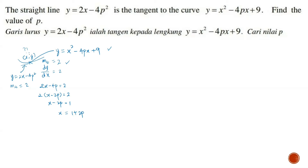Once we reach here, we can substitute the x value into our point. Initially we did not know what that x-coordinate was — it is 1 plus 2p. That is the reason I like to illustrate the curve with the tangent, because these three are considered the golden triangle. Once I have any one of the coordinates, I can substitute into the function. Let's label the tangent as equation 1 and the curve as equation 2.